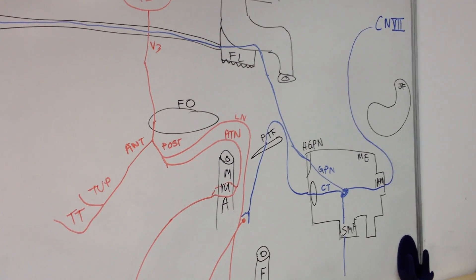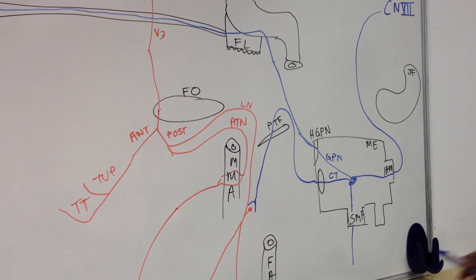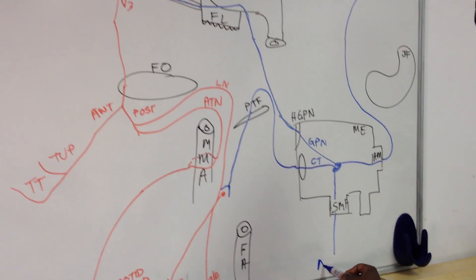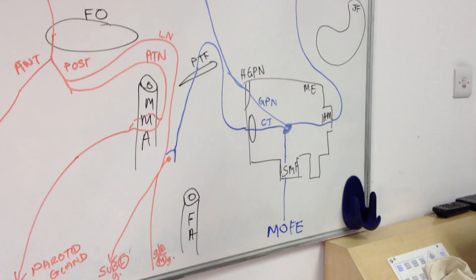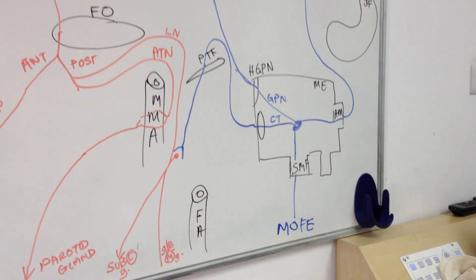So the facial nerve, when it comes out the stylomastoid foramen, is going to supply the muscles of facial expression. Okay, that completes the facial nerve.